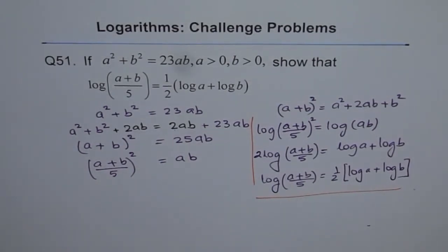I hope you appreciate the method. We made a perfect square by adding 2ab on both sides, and then solved and found log on both sides, and got our result. That's the way these challenge problems can be done.